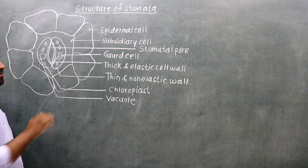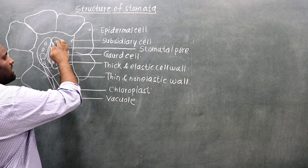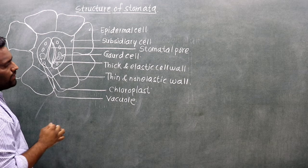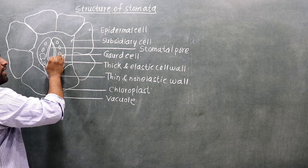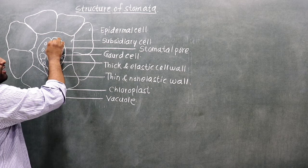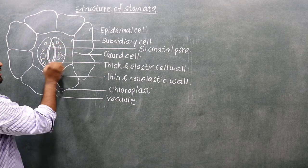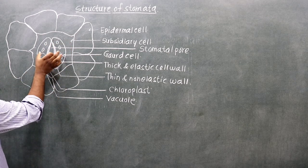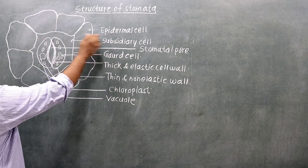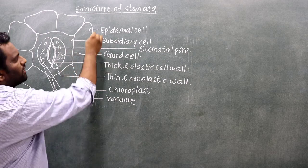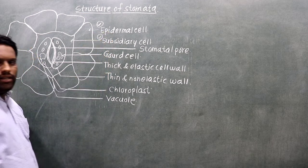There are two cells flanking the stomata called guard cells. In the guard cell there is a chloroplast. The inner wall of this cell is thick and the outer wall is thin. There are also two important surrounding cell types: epidermal cells and subsidiary cells.